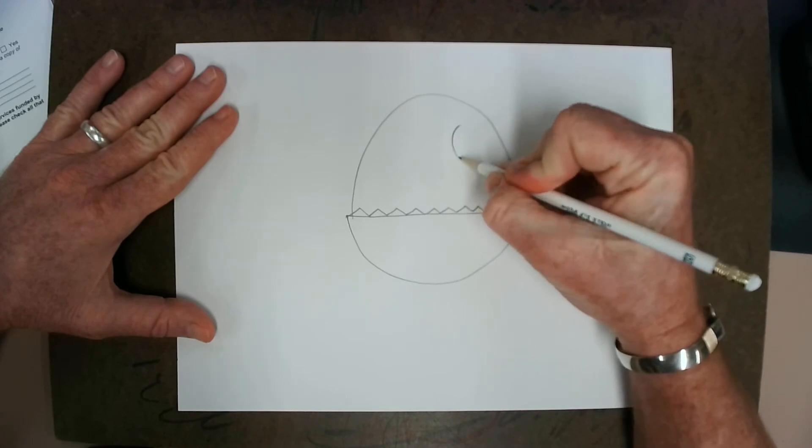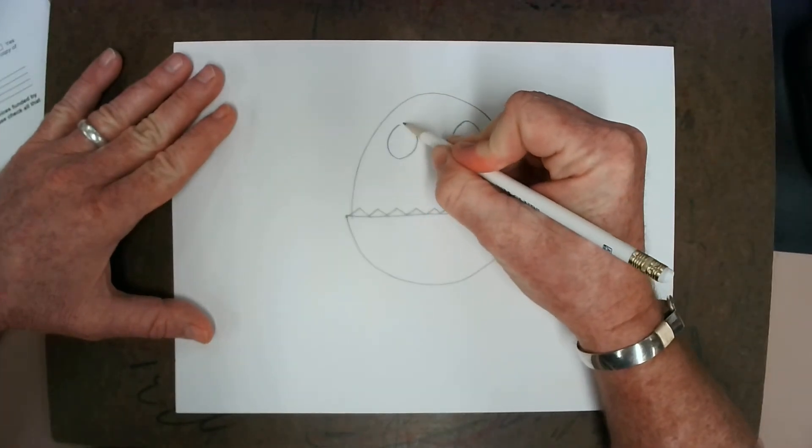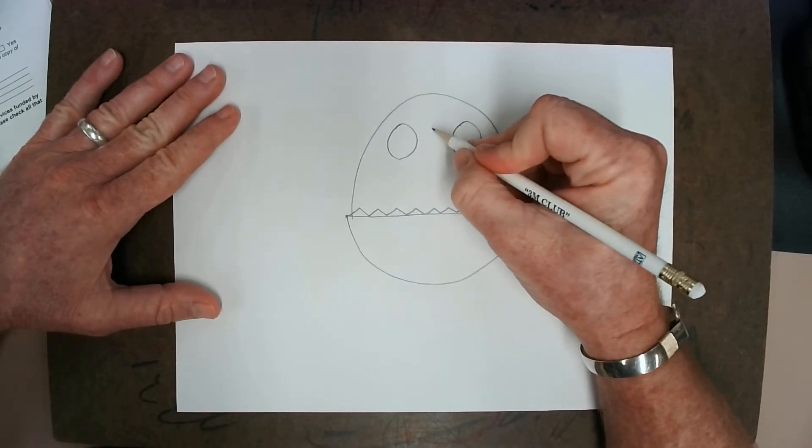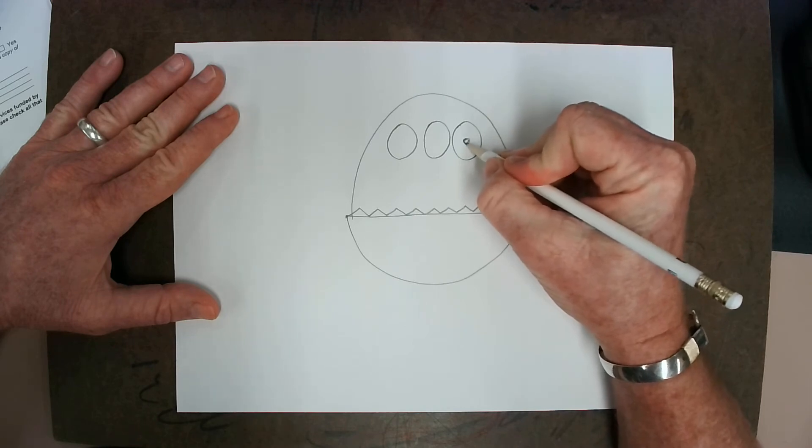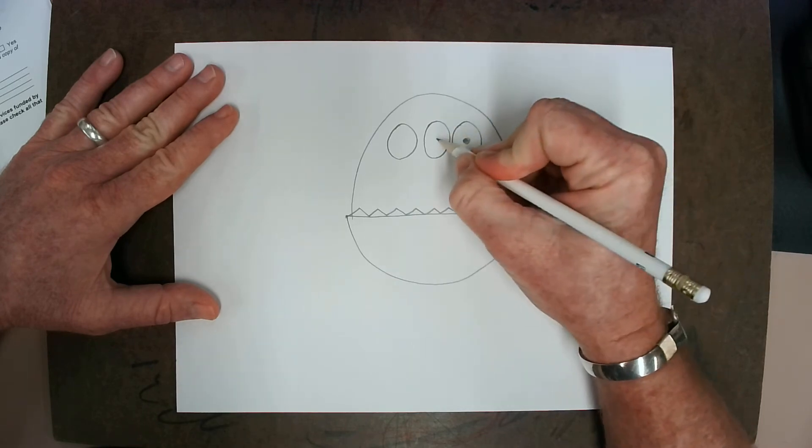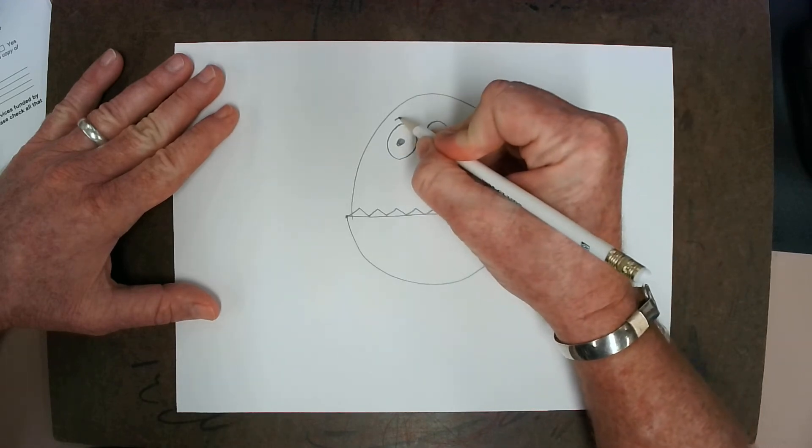I can use a curved line to make some eyes. You can have one eye, two eyes, even three eyes. Like I said, this is a silly creature. So, I'll put a little dark circle in the middle. That's for the center of the eye.